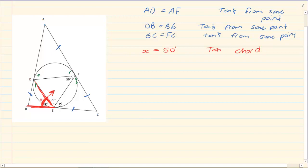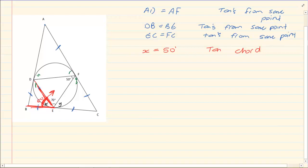If this angle is 50 degrees, and we have an isosceles triangle, then P is equal to 50 degrees. It is an isosceles triangle because DB is equal to BE — and you have already told them why.